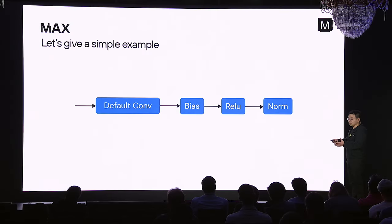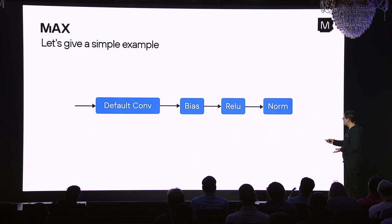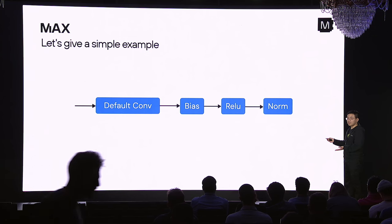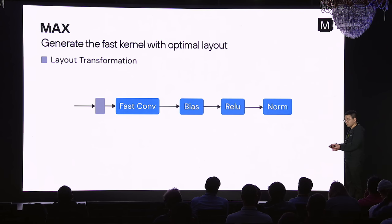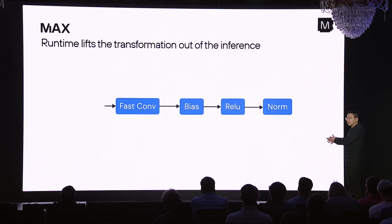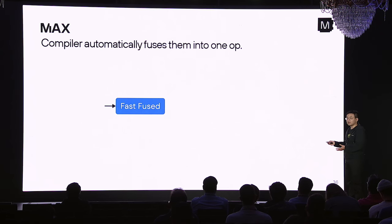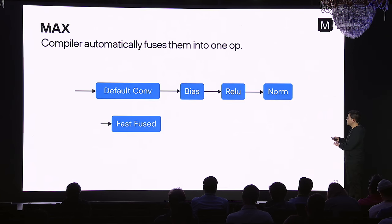Let's use an example to show how all the components collaborate together. In this single pipeline, we have a convolution kernel using the default algorithm, followed by a bias, then a ReLU activation function, then some normalization. First, we can specialize on the static dimension — that gives us a fast convolution kernel, but this comes with additional cost because the layout required may differ. Next, the Max runtime lifts this layout transformation into model initialization, removing it from inference time. Then the compiler automatically fuses all ops into a more performant fused op.